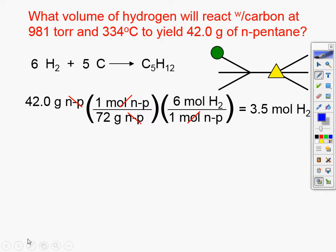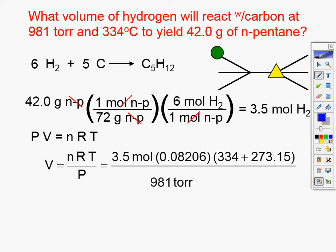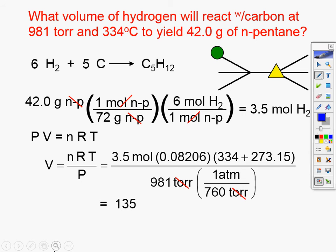So n equals the number of moles. P equals nRT — solving for volume. I'm going to use 0.0826, divide by 981, add my 273. I'm getting 135 liters of hydrogen. I like that problem a lot.